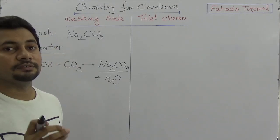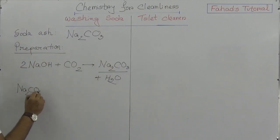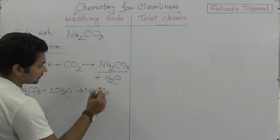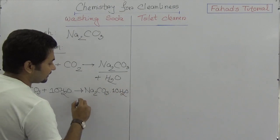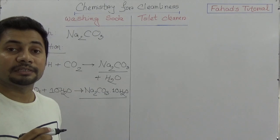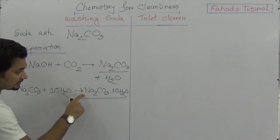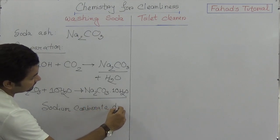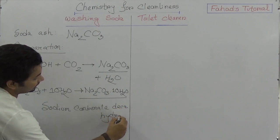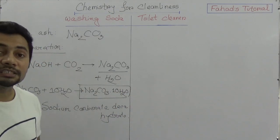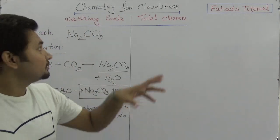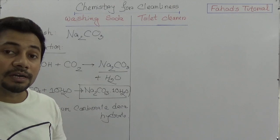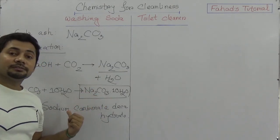This sodium carbonate dissolves in water. When sodium carbonate is mixed with 10 molecules of water, it produces Na₂CO₃·10H₂O. The chemical name of this formula is sodium carbonate decahydrate — deca means 10. This is the washing soda. The simple soda ash formula is sodium carbonate; when added with 10 molecules of water it becomes washing soda, called sodium carbonate decahydrate.